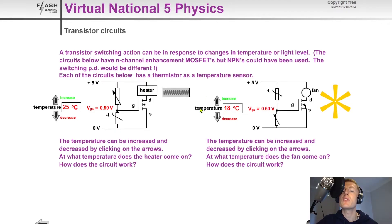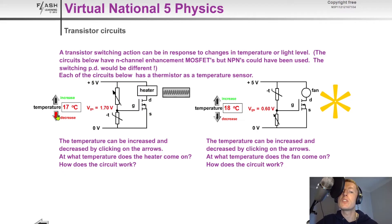Just to show you an example of this low temperature circuit — we're looking at this one here, which has a MOSFET and a heater. Again, we've got the thermistor as the lower component and the variable resistor as the upper component. As temperature decreases, the resistance of the thermistor goes up, so the voltage across the thermistor goes up. When the voltage across the thermistor reaches about 1.8 volts — roughly the switch-on voltage for a MOSFET — the heater turns on.